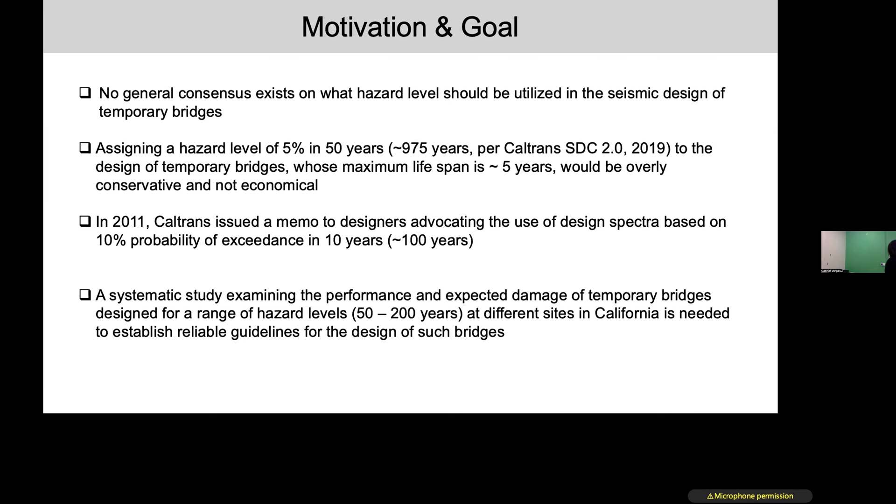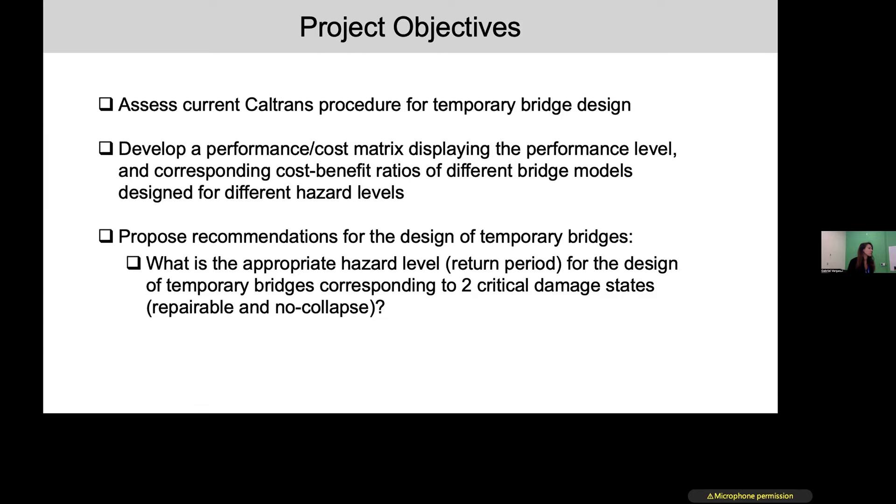Getting to the actual specific objectives of the project, we first want to assess the current Caltrans procedure for temporary bridge design. This is the current level for the design of temporary bridges, which refers to two different critical damage states: repairable damage and no collapse. The whole project is articulated in just four separate tasks, and I'm going to quickly walk through each of these tasks today.